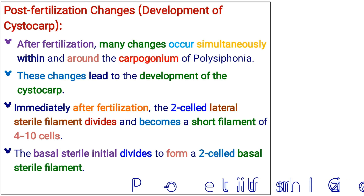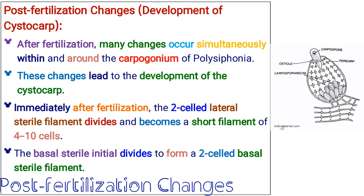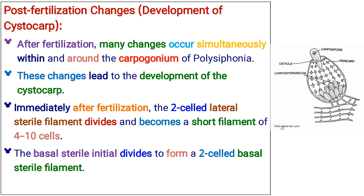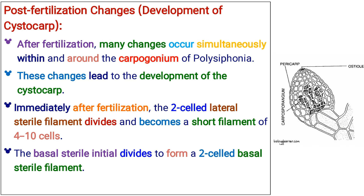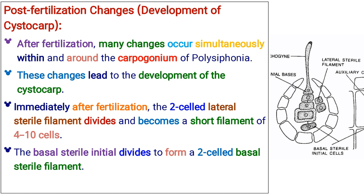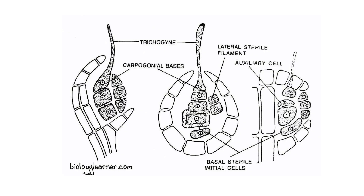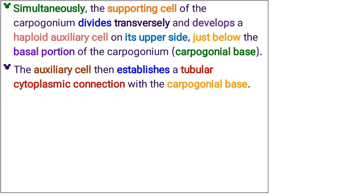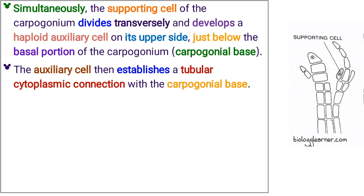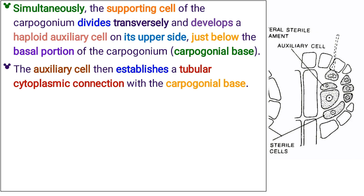After fertilization, many changes occur simultaneously within and around the carpogonium of Polysiphonia, leading to the development of the cystocarp. Immediately after fertilization, the two-celled lateral sterile filament divides and becomes a short filament of four to ten cells. The basal sterile initial divides to form a two-celled basal sterile filament. Simultaneously, the supporting cell of the carpogonium divides transversely and develops a haploid auxiliary cell on its upper side, just below the basal portion of the carpogonium.